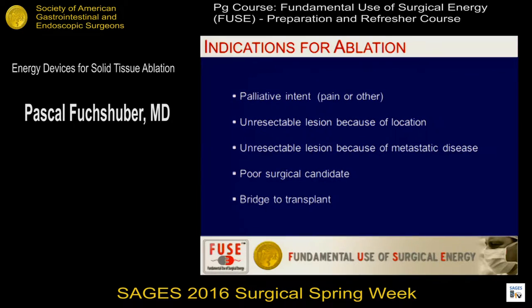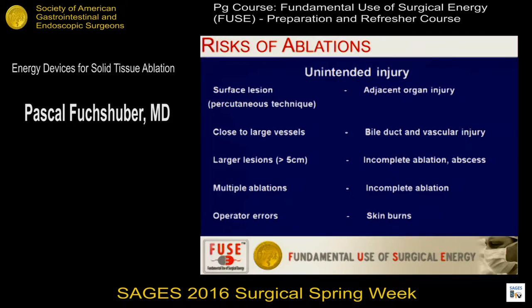Indications for ablation can be summarized as: palliative unresectable lesions because of location, unresectable lesions because of metastatic disease, poor surgical candidates, and bridge to transplant. For the most part, they are not curative except for very small lesions. Unintended injuries from RFA can occur with surface lesions where heat transfers to adjacent organs like the stomach, gallbladder, diaphragm, or colon. Proximity to large vessels causes damage. Lesions over 5 centimeters are very difficult to completely ablate, multiple ablations increase the risk of incomplete ablation, and operator errors can cause skin burns.